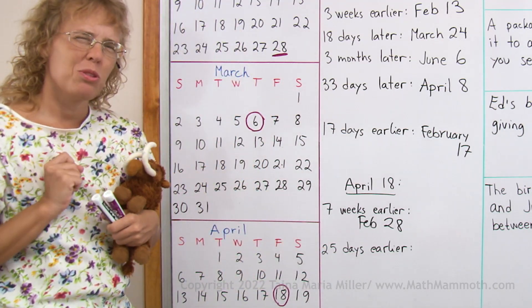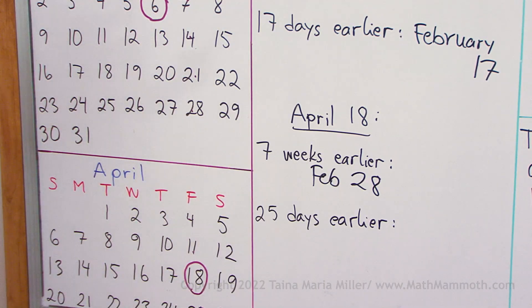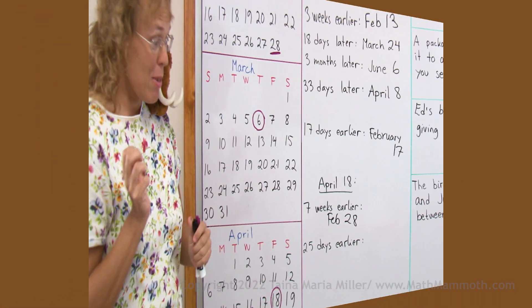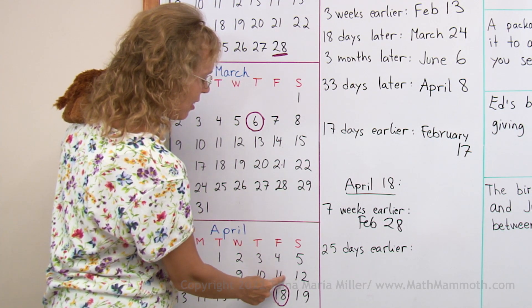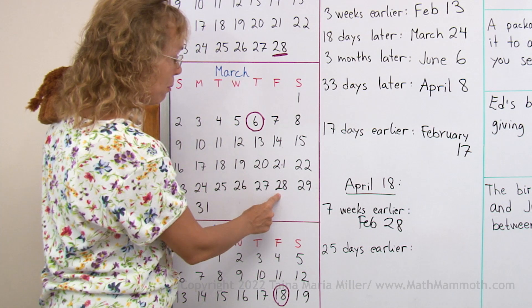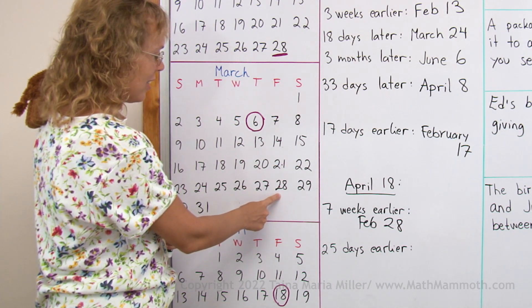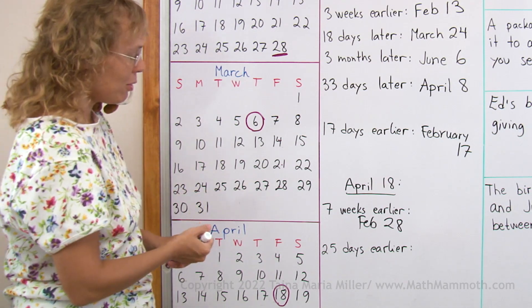25 days earlier. How would you find that out? If we are at April 18th and you need to find a date that is 25 days earlier, what shall you do? My method was to count by sevens, by weeks. So 7 days earlier, then 14 days earlier, then 21 days earlier, and then 22, 23, 24, and 25 — this one here. March 24.